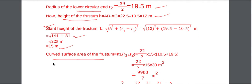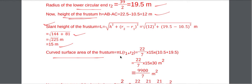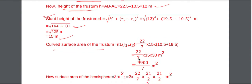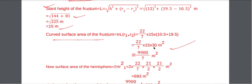Curved surface area of the frustum = π × L × (R1 + R2) = (22/7) × 15 × (10.5 + 19.5) = (22/7) × 15 × 30 = 9900/7 meter square.